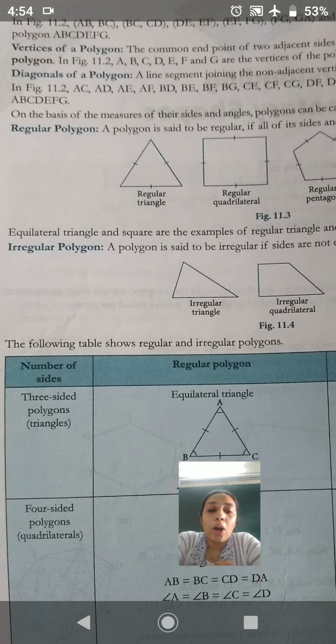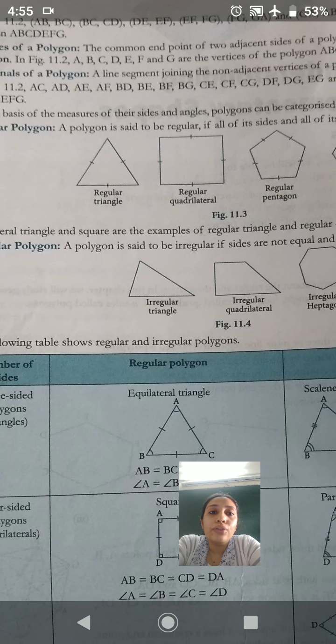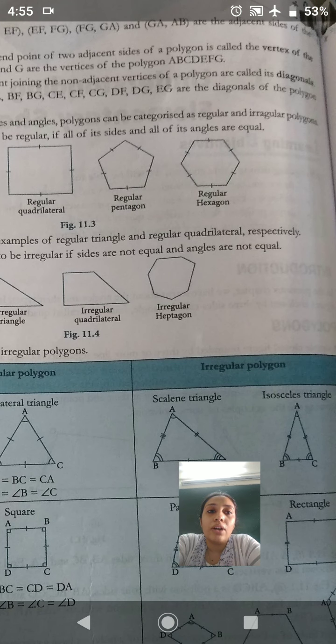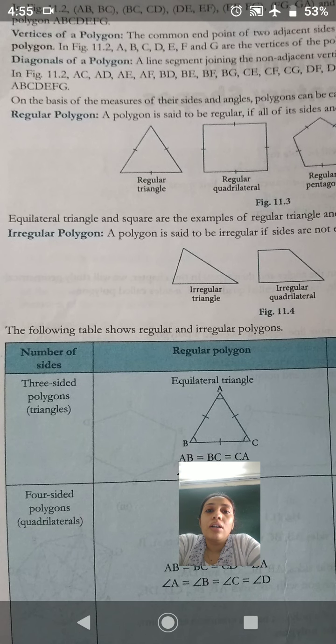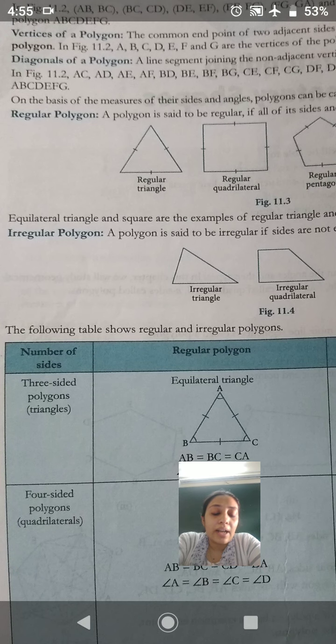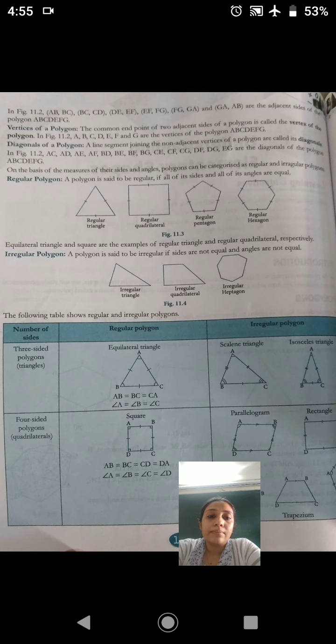Next is the vertices of a polygon. What is a vertex? Let's see first of all the definition. The common end point of two adjacent sides of a polygon is called the vertex of the polygon. That is, if you look at this figure, look here, there are vertices in all of them. Vertex means the point, the common end point.